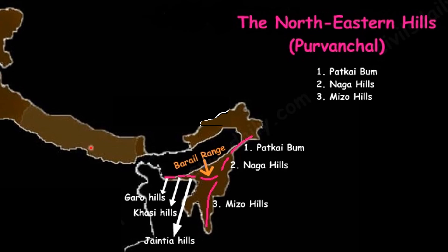The eastward continuation of the Himalayas is found beyond the Brahmaputra Valley and is collectively known as the Purvachal, or the Eastern Hills — as Purab means east. The Purvachal are the hills which run from the end of the Brahmaputra Valley towards the south, and include the Patkai Bum, the Naga Hills, the Mizo Hills, and the Garo, Khasi, and Jaintia Hills.